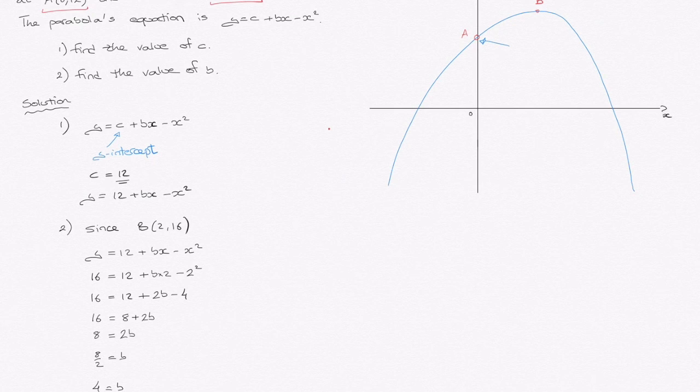And there we have it. So we can now write this curve's equation. It's y is equal to 12 plus 4x minus x squared. And that's how we would answer it.